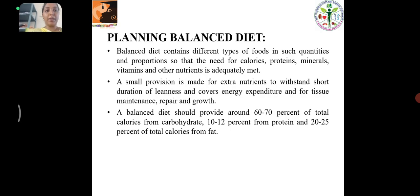Planning Balanced Diet: A balanced diet contains different types of foods in such quantities and proportions so that the need for calories, protein, mineral, vitamins and other nutrients is adequately met. The balanced diet should provide around 60-70% of total calories from carbohydrate, 10-12% from protein and 20-25% from fat.